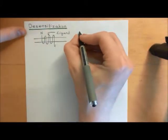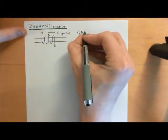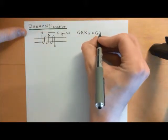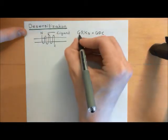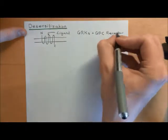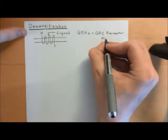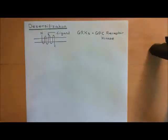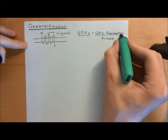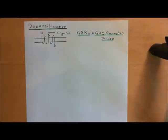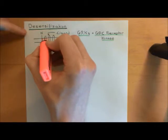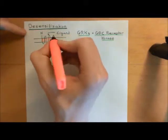This involves enzymes which collectively are known as GRKs, which stands for G-protein-coupled receptor kinase. These are enzymes which are going to phosphorylate the intracellular aspect of the G-protein-coupled receptor when it is in the on state. They will phosphorylate it if it's been on for too long, or at least the probability of it getting phosphorylated will increase the longer it's on.